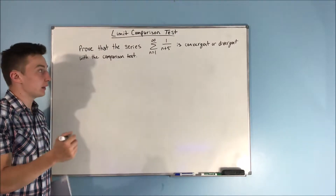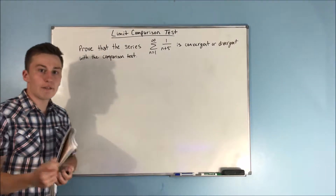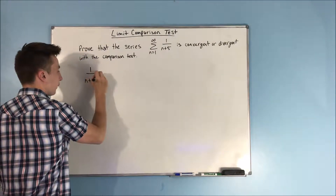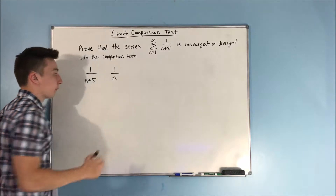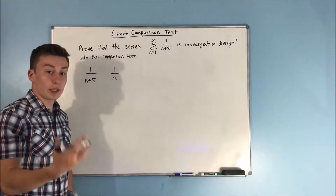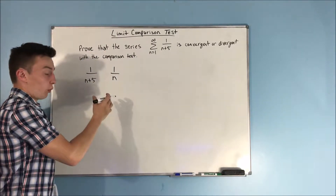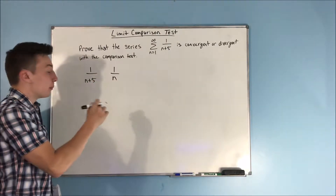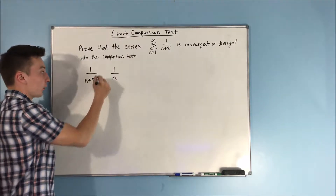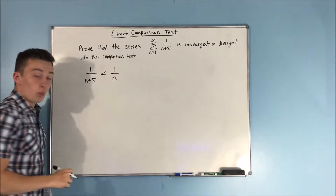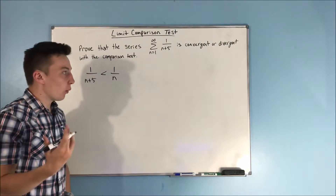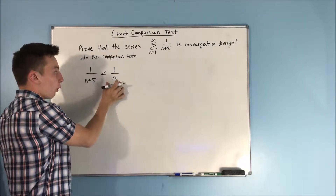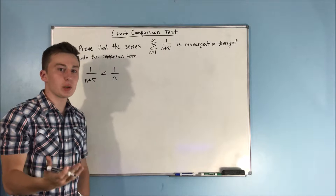We want to prove it with the comparison test. Obviously we're going to compare 1 over n plus 5 with 1 over n. Now what's the relationship between these two? Well, n plus 5 is going to be the bigger denominator, meaning that this whole fraction is going to be less than 1 over n. But there's a problem — we know that the sum from n equals 1 to infinity of 1 over n is divergent.